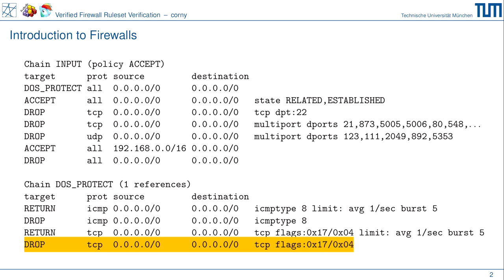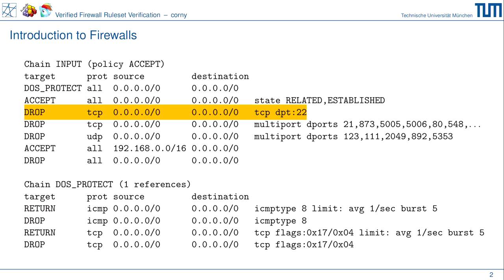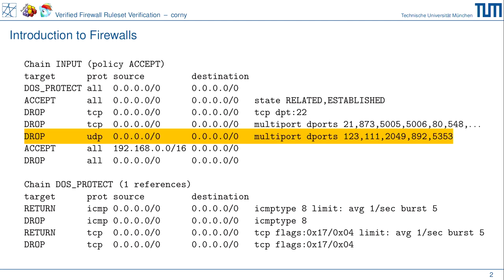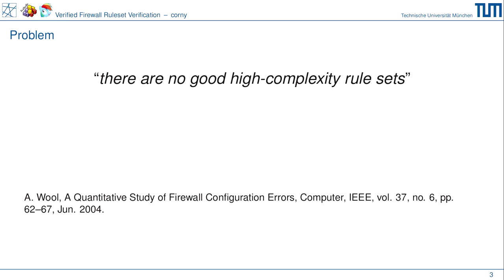Die nächste Regel schaut sich auch wieder ICMP-Echo-Requests an und wirft es weg — diese zwei Regeln implementieren Rate-Limiting. Dann sehen wir dasselbe Muster für TCP-Pakete mit dem Reset-Flag, das weggeworfen wird, wenn ein entsprechendes Limit überschritten wird. Wenn wir durchgehen ohne weggeworfen zu werden, landen wir in der nächsten Regel, wo alle Pakete einer bestehenden Verbindung angenommen werden. Am Ende akzeptiert die Firewall alle Pakete im lokalen 192.168-Netz und wirft alles andere weg.